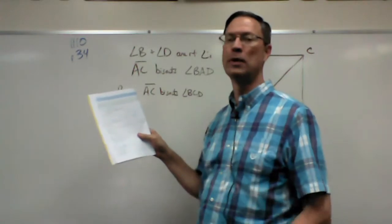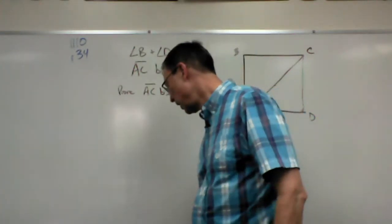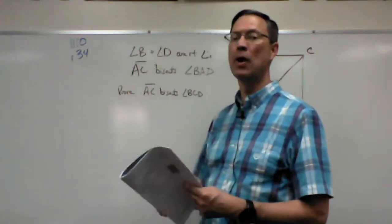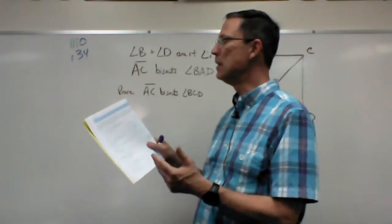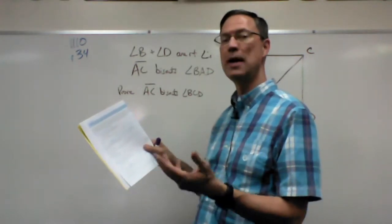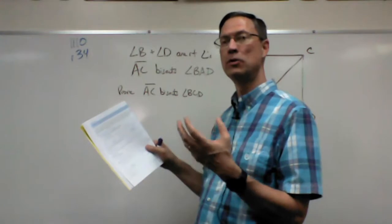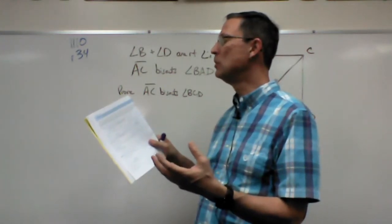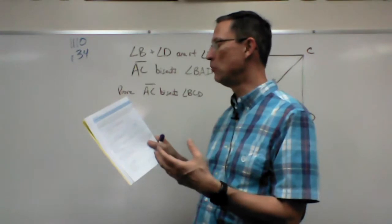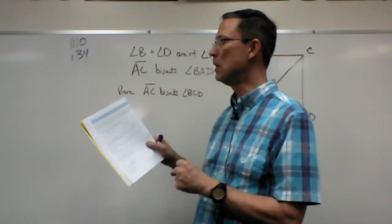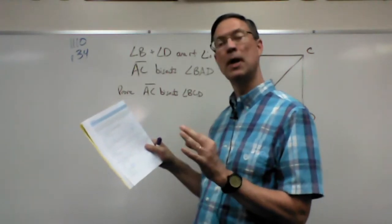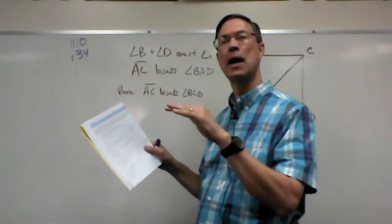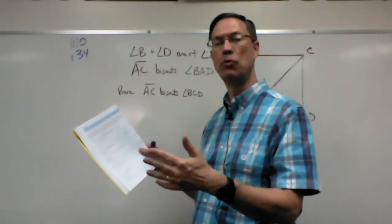This assumes that we're dealing with two right triangles, and the hypotenuse and angle of one right triangle congruent to the hypotenuse and angle of another right triangle means that those two triangles are congruent. Remember, the hypotenuse is the side opposite the right angle.